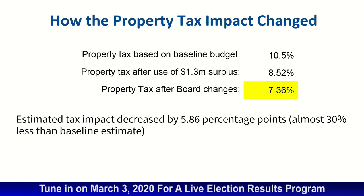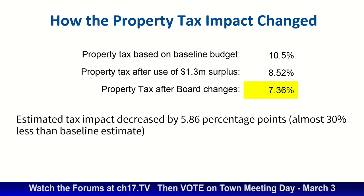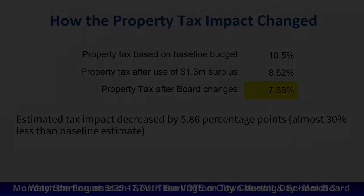So here it is in summary — the impact, what people want to know. We started at 10.5% after we whittled it down; we're not going to do 15–17% with all the investment. And then we applied the $1.3 million surplus to it, which brought it to 8.52%. And then finally with the reductions that we added, we get the final of 7.36% tax impact.